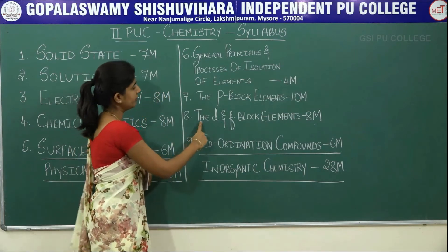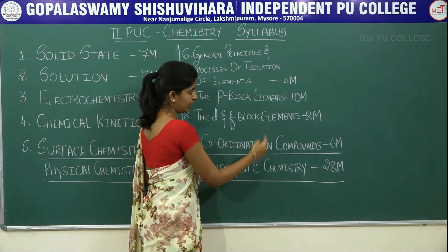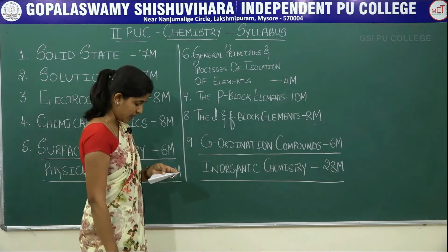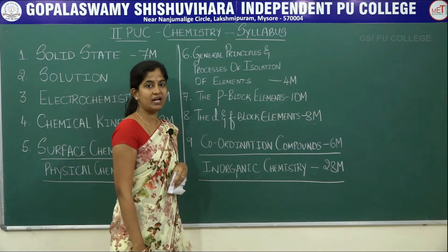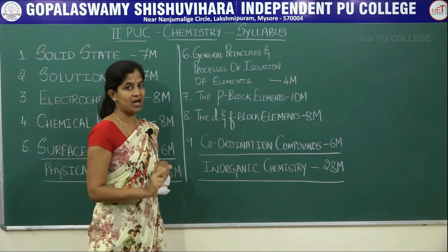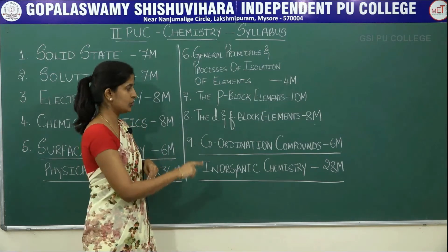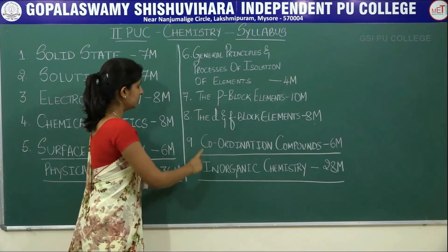The next chapter is d and f block elements. Its total weightage is 8 marks, divided into one 2-mark question and two 3-mark questions — that is 6 plus 2, giving a total of 8 marks.